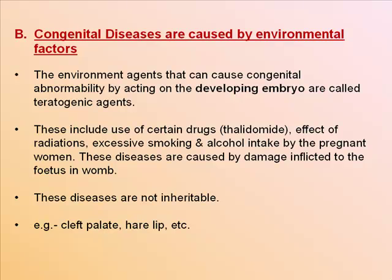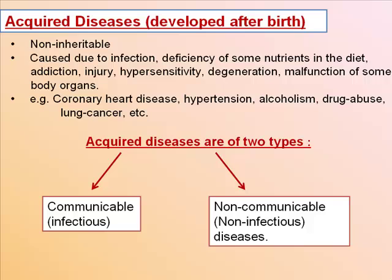Congenital diseases are also caused by environmental factors. Environmental agents that can cause congenital abnormalities by acting on the developing embryo are called teratogenic agents. These include use of certain drugs like thalidomide, effect of radiations, excessive smoking and alcohol intake by the pregnant woman. These diseases are caused by damage inflicted to the fetus in the womb and are not inheritable. Examples include cleft palate and harelip.